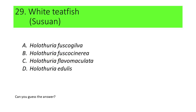Number 29. This sea cucumber species is commonly called white teatfish. Locally, this is called susuan. A. Holothuria fuscogilva, B. Holothuria fuscosineria, C. Holothuria flavomaculata, and D. Holothuria idolis. Can you guess the answer?